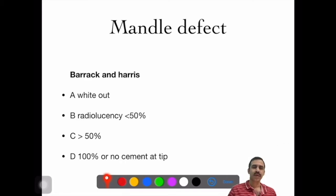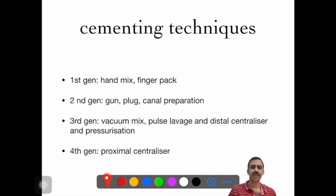Cementing techniques can be classified into various generations. First generation is hand mixing with finger pack. Second generation uses gun, plug, and canal provision. Third generation has vacuum mixing, pulse lavage, and distal centralizer with pressurization. If you are using proximal centralizer, that's called fourth generation.